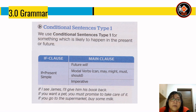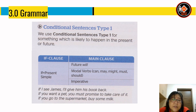The rules for conditional sentences Type 1: we use Type 1 for something likely to happen in the present or future. The structure is: if clause (if + present simple) and main clause (future will, or modal verbs can/may/might/must/should, or imperative). Examples: 'If I see James, I'll give him his book back' (future); 'If you want a pet, you must promise to take care of it' (modal verb); 'If you go to the supermarket, buy some milk' (imperative).